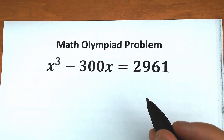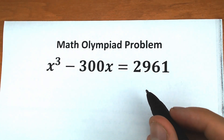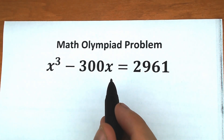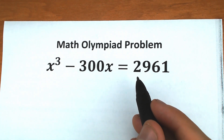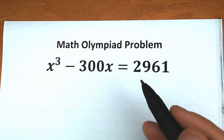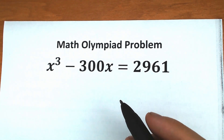Hello my friend, happy to see you here on my channel. Today we have a really great challenge: x cubed minus 300x equals 2,961. Let's solve this challenge and find our x.